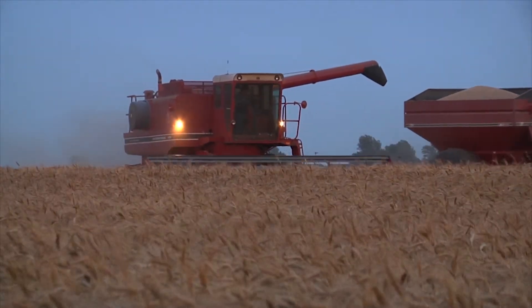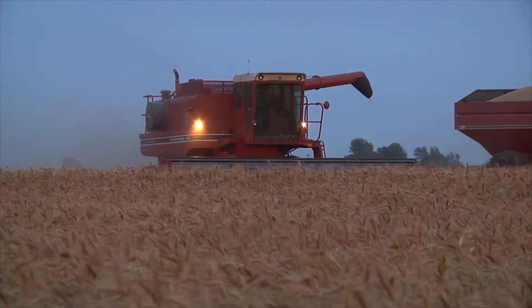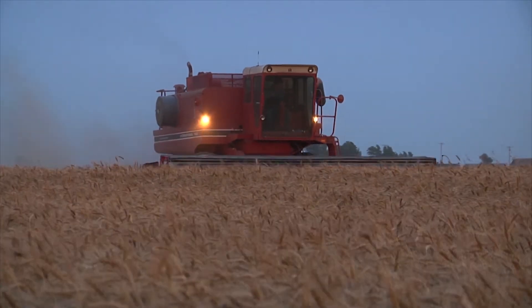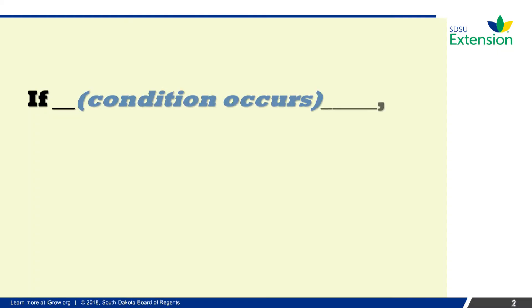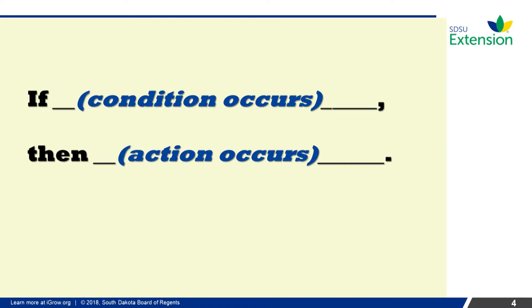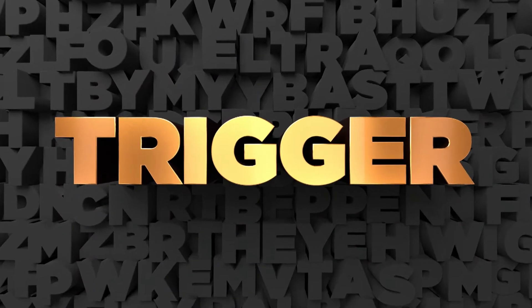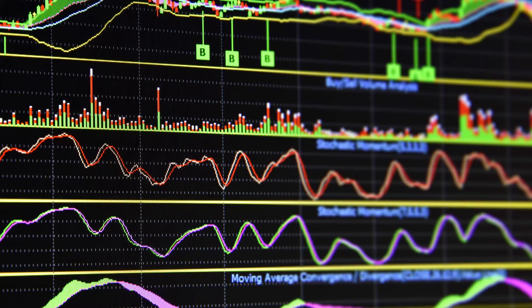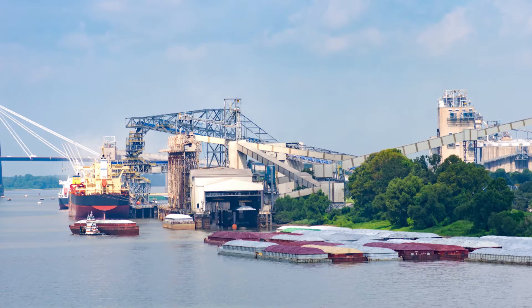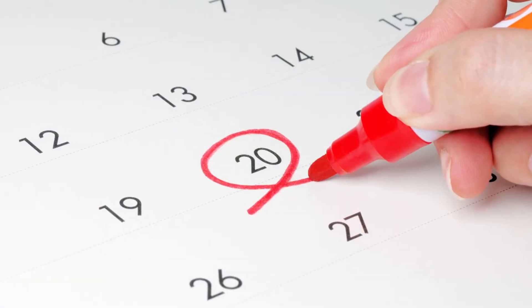To identify decision points in your marketing plan, you must develop rules. What do we mean by a rule? Rules are based on the following structure: if condition A occurs, then action B follows. Rules can be based on various triggers that can include technical signals, fundamental signals, and/or specific dates.